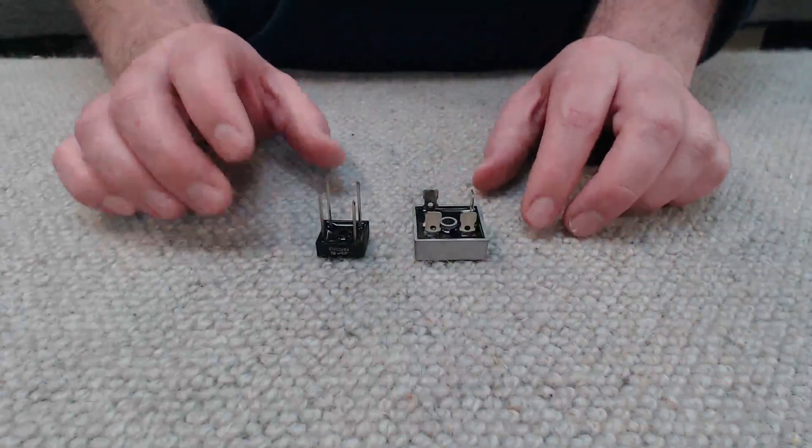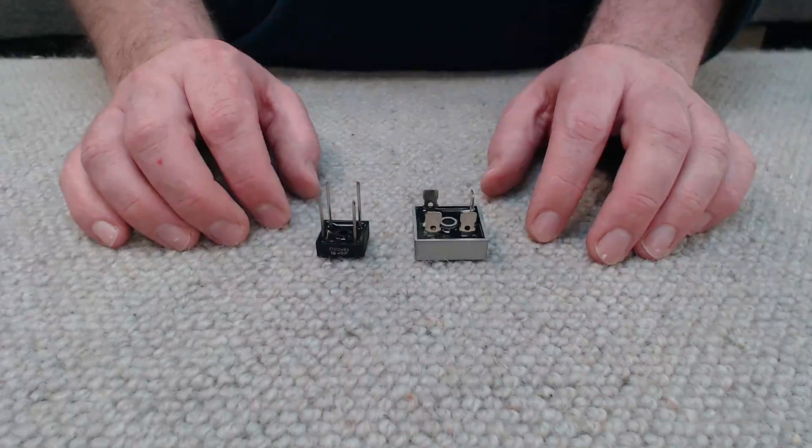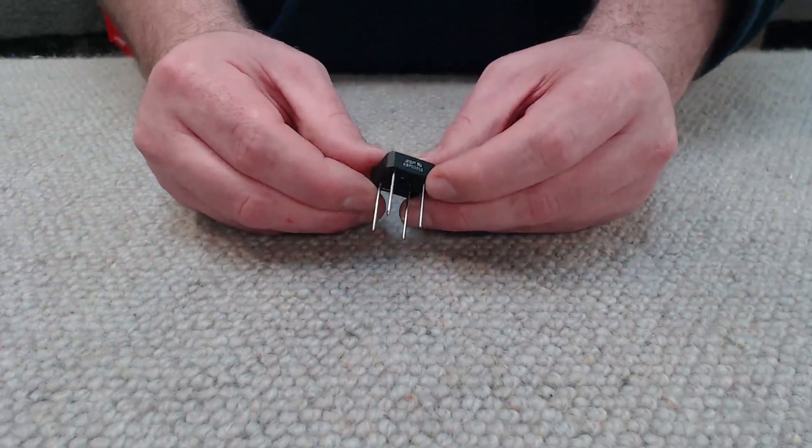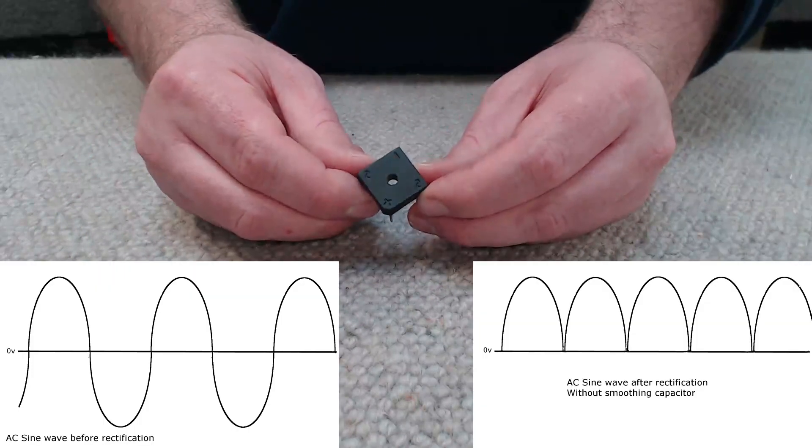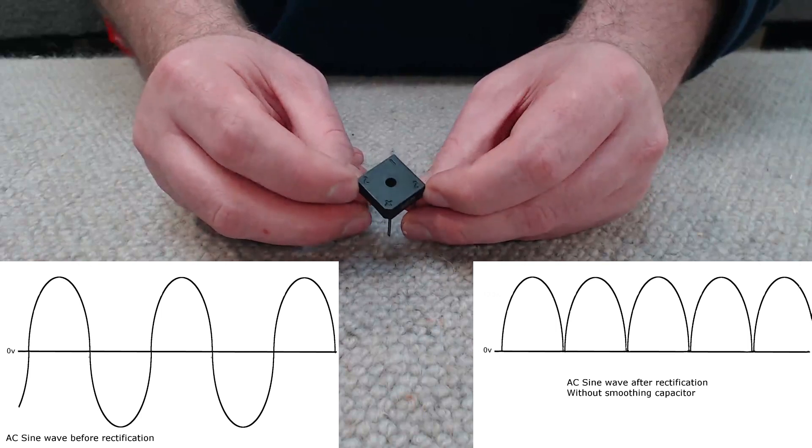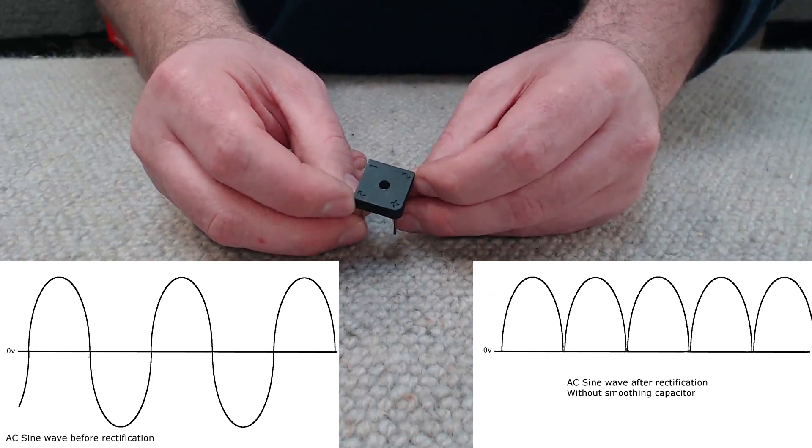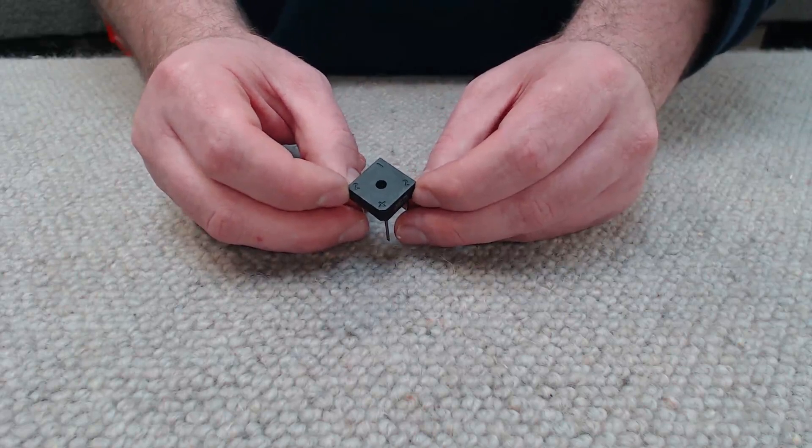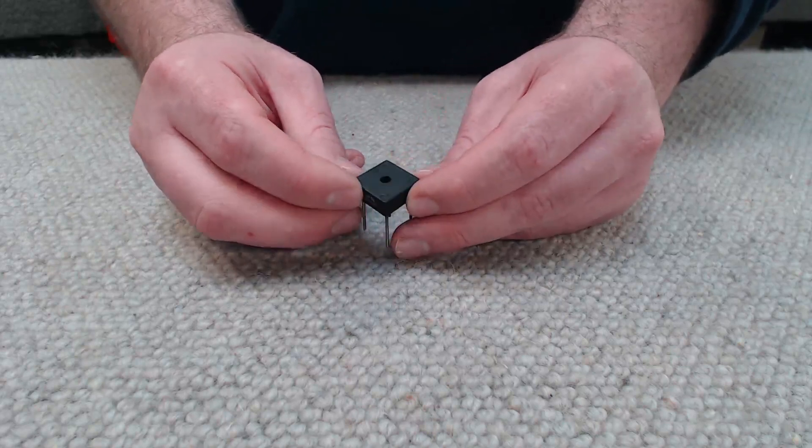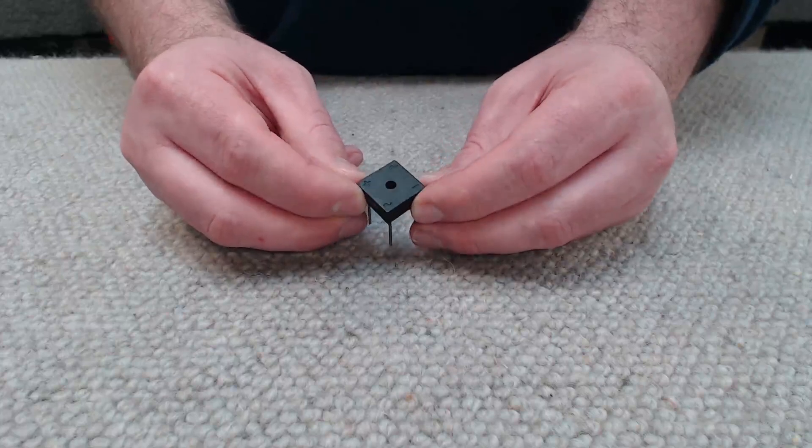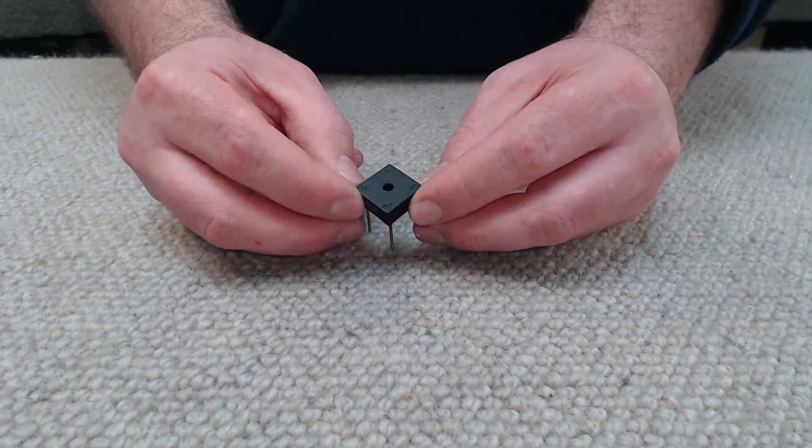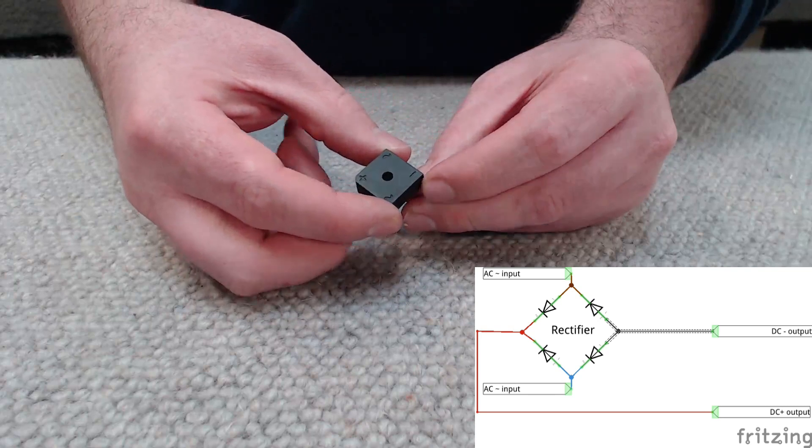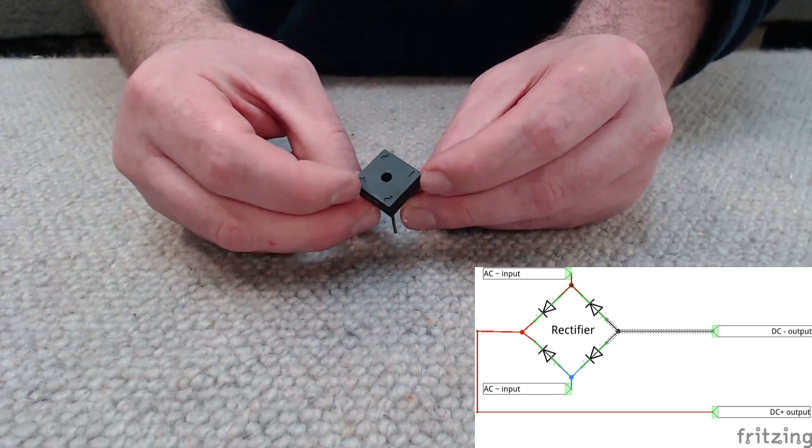So the first component I'm going to talk about is the full bridge rectifier. So what is a full bridge rectifier? Well in a nutshell its job is to convert AC to DC power. If we look at the top of this example you can see we've got in two corners hyphen squiggle marks. This is for the AC power input. Doesn't matter which side goes to live or neutral or the output from your transformer. And then on the other two corners we've got a plus and minus symbol and this is for our now rectified DC power output.